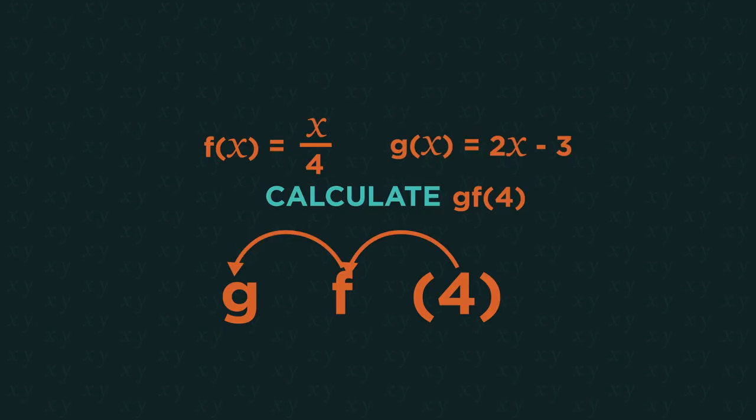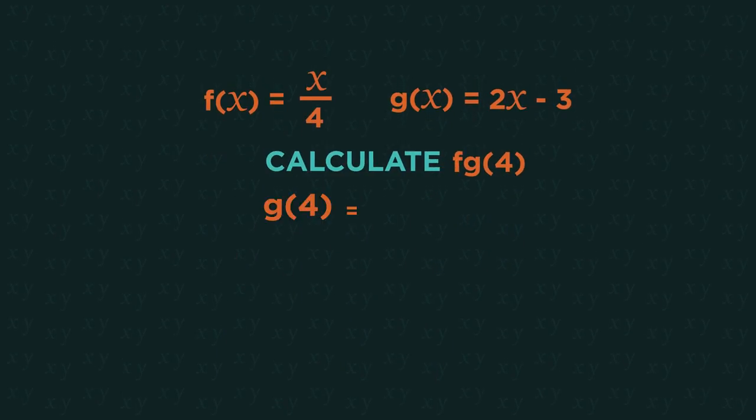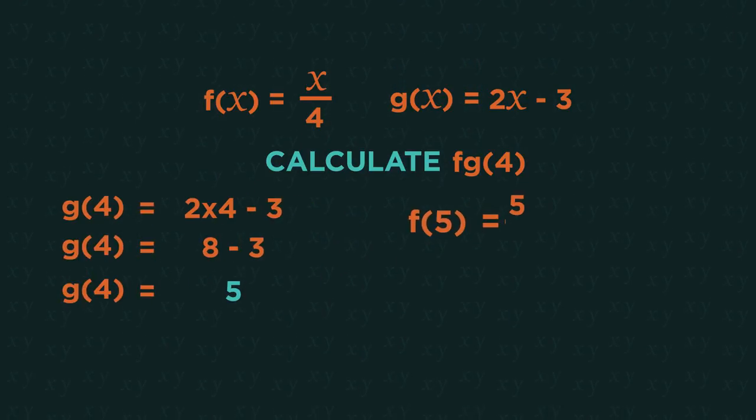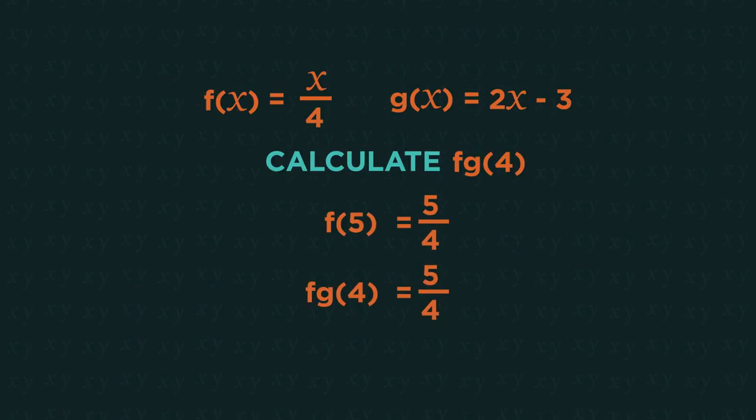So let's go back to that first question. Start with g of 4, which gives us 5, and then we put 5 into f. And that's our final answer.